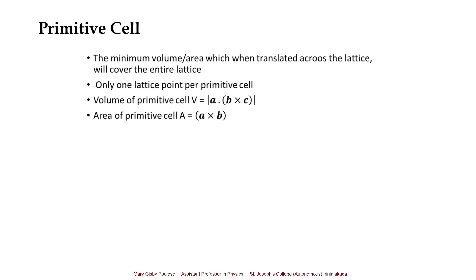A primitive cell is the minimum volume or area which, when translated across the lattice, covers the entire lattice. It is a type of unit cell, but its peculiarity is that it contains only one lattice point per primitive cell — unlike general unit cells which can have more than one lattice point. The volume of the primitive cell is a·(b×c) and the area is |a×b|, where a, b, c are the lattice vectors.